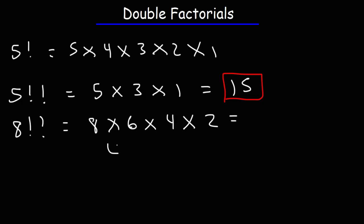8 times 6 is 48. 4 times 2 is 8. So 48 times 8, that's going to be 384. So that's how you can evaluate a double factorial.